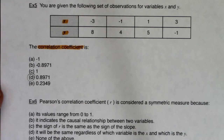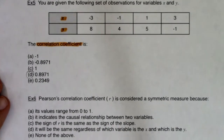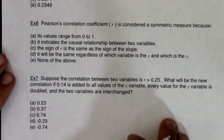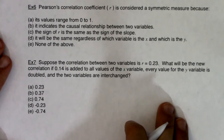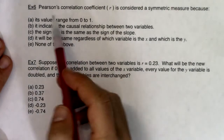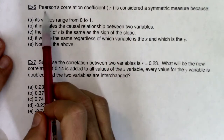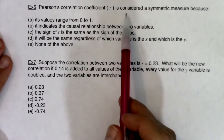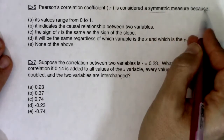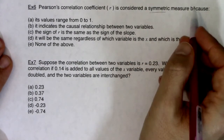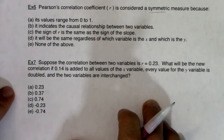Let's take a look at examples 6 and 7 — they're a little more convoluted, so we're going to have some conversations about them. Example 6 says Pearson's correlation coefficient — R, and this isn't Pearson the publisher, this was a statistician — is considered symmetric. Let's see if we can figure out which of these statements is true.